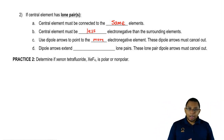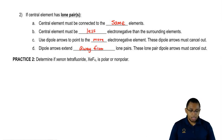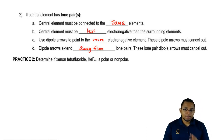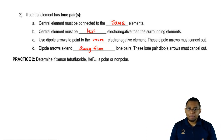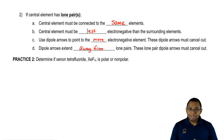We also have dipole arrows for lone pairs. Dipole arrows extend away from lone pairs, and these lone pair dipole arrows must also cancel out. We need to make a distinction: we have two types of dipole arrows — dipole arrows between elements and dipole arrows for lone pairs. They cannot cancel each other out. Lone pair dipole arrows must cancel out lone pair dipole arrows, and element dipole arrows must cancel out element dipole arrows.